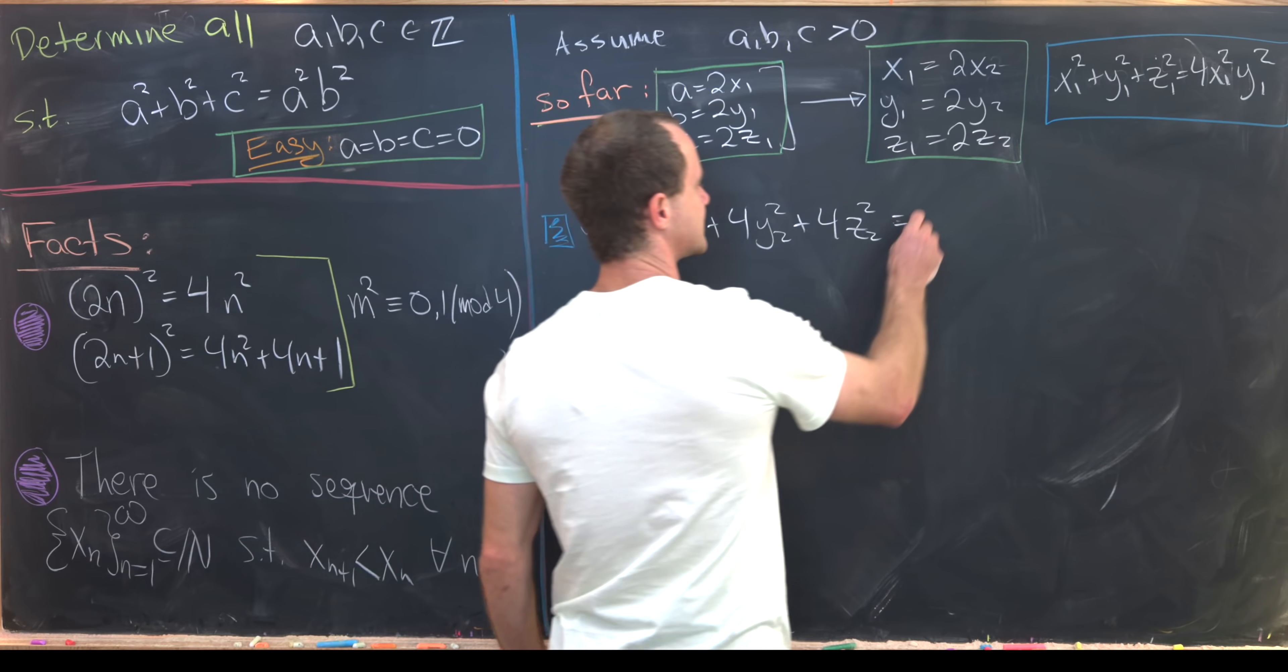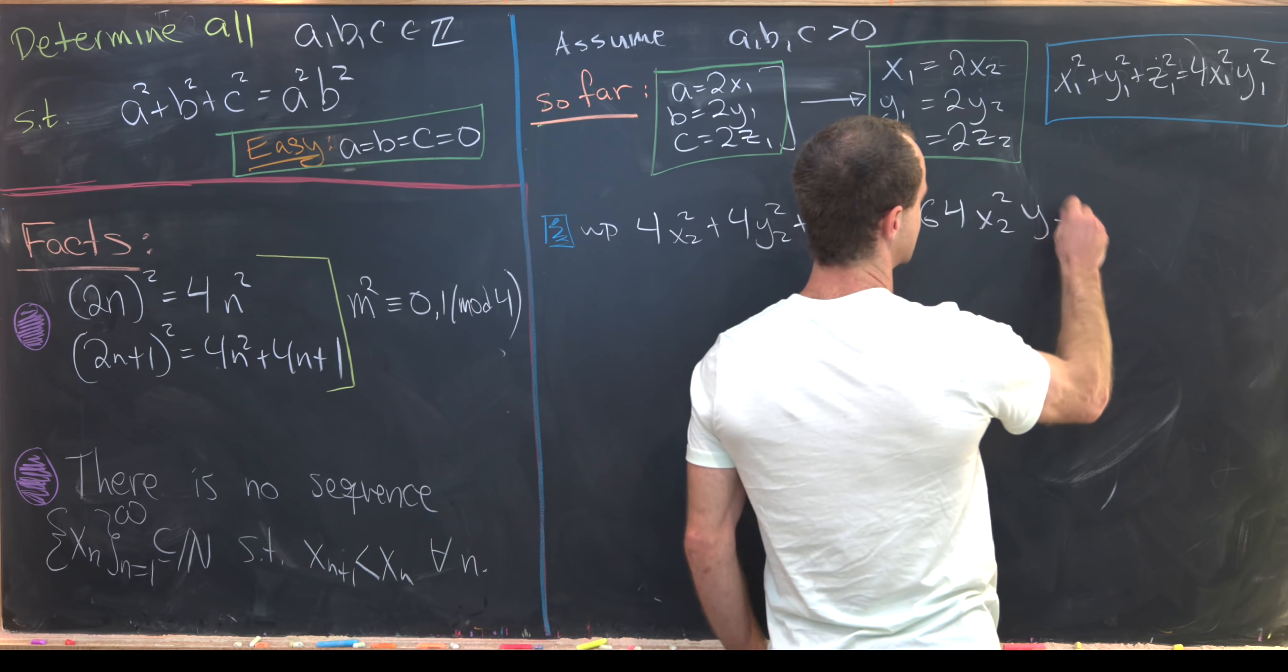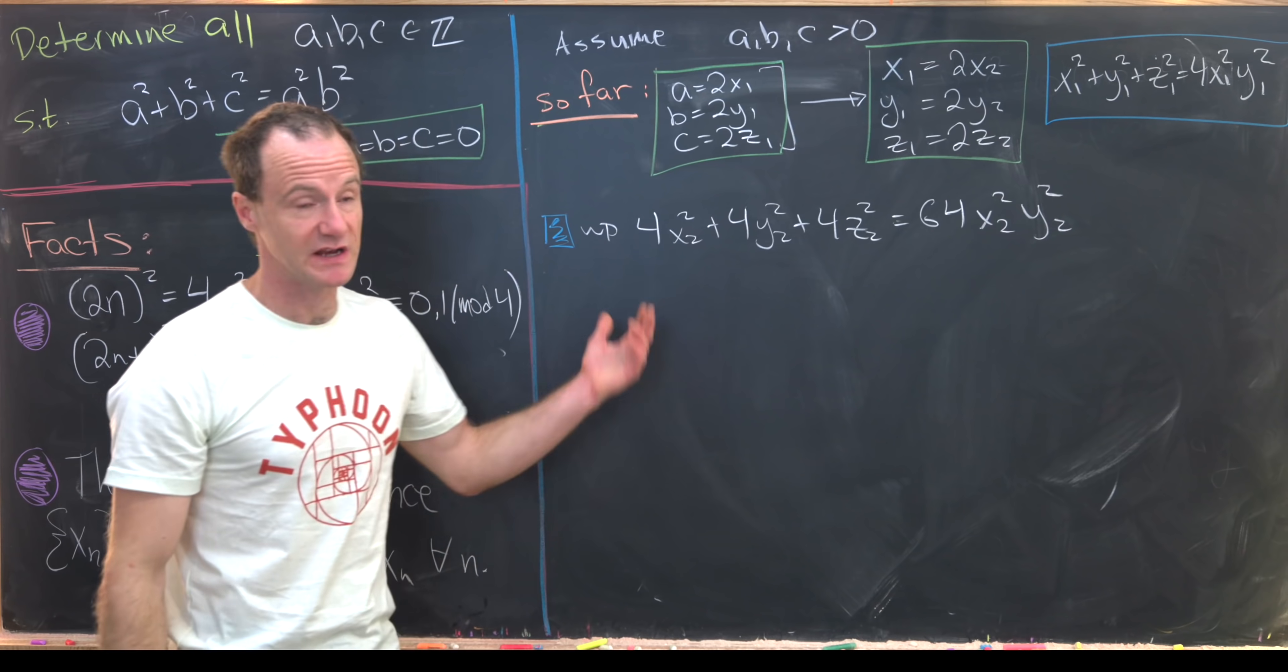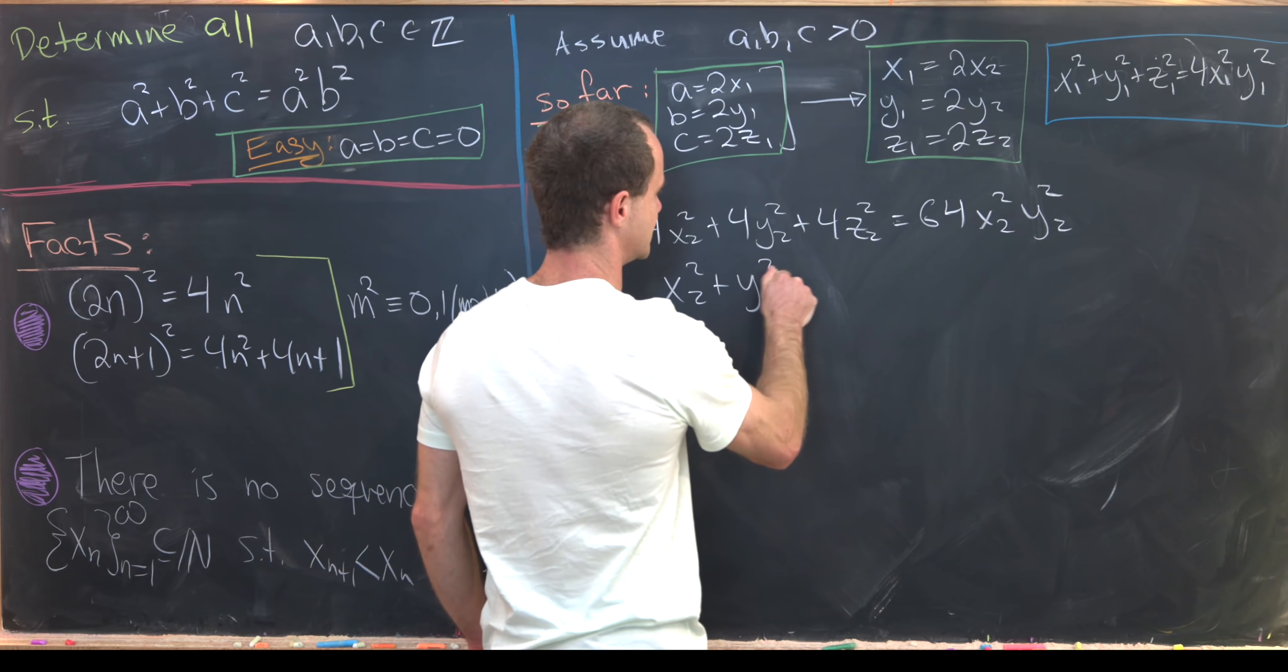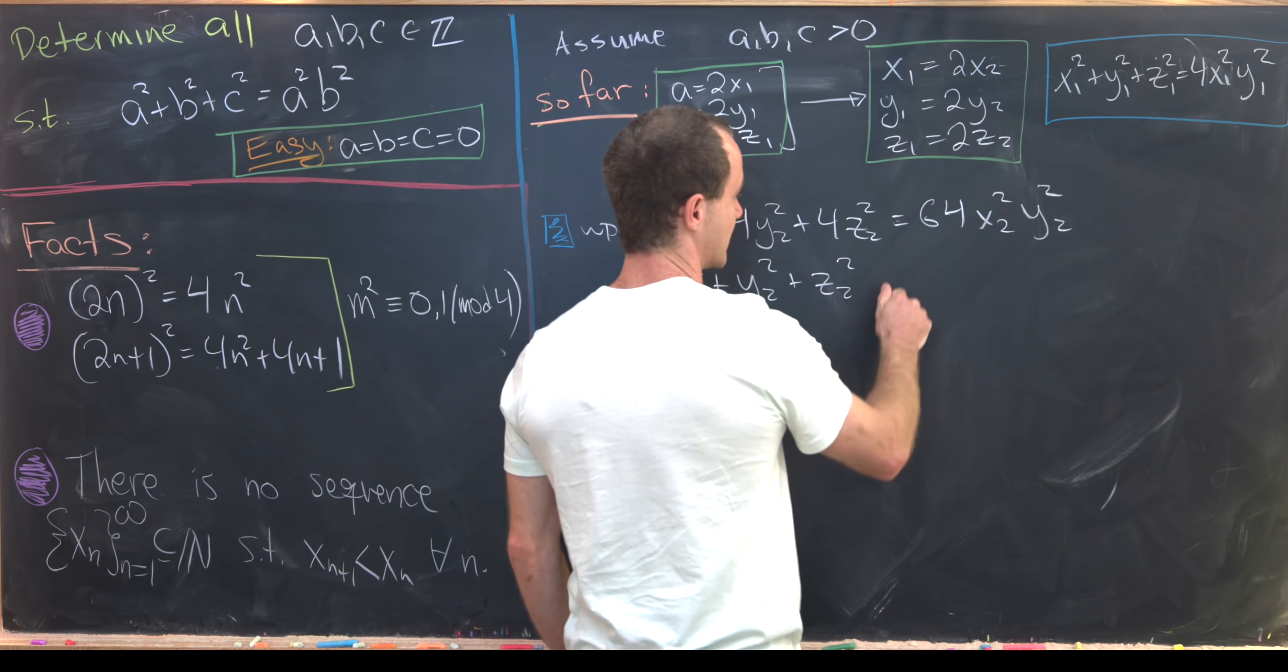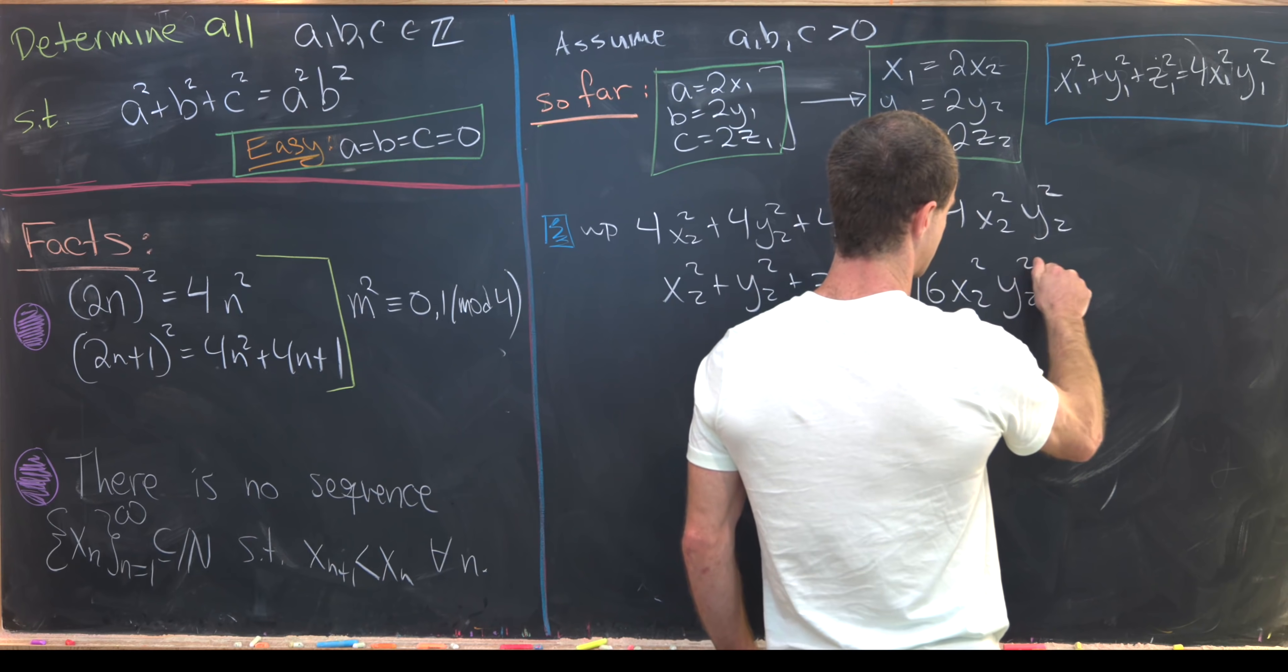We can divide by 4. That'll give us x₂² + y₂² + z₂² = 16x₂²y₂².